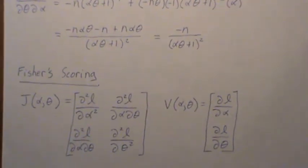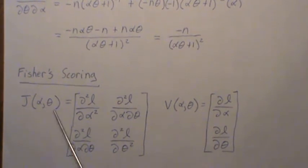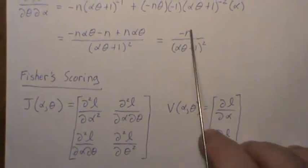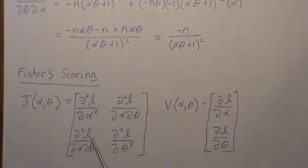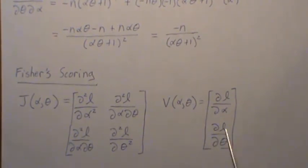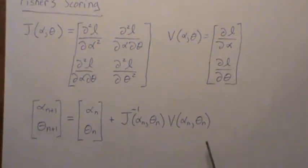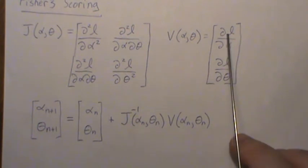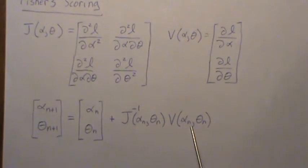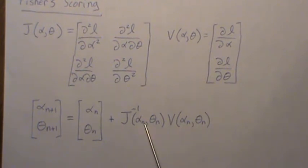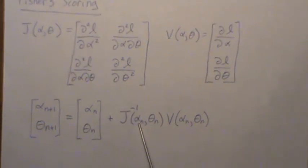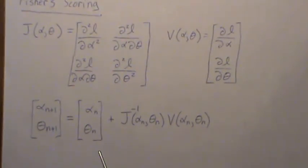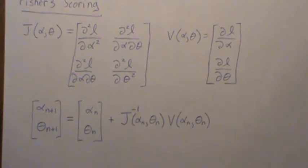The Fisher scoring is we need the Jacobian, or the observed Fisher information. So what we just derived, those go into this matrix. And then this is the score, the gradient, and this is the algorithm. So we take the score, evaluated at an initial value. We take it times the inverse of this Jacobian, evaluated at the initial value, plus the initial value. That gives us an updated value for alpha and theta. Then we take those values and plug them back in, and it's just an iterative process until we get convergence.